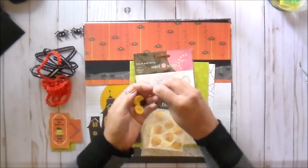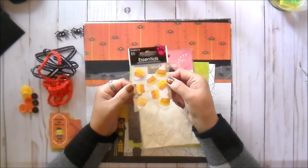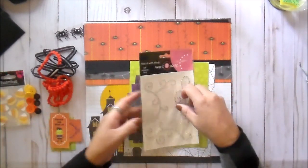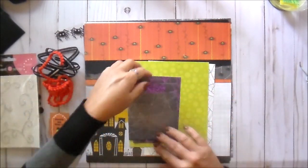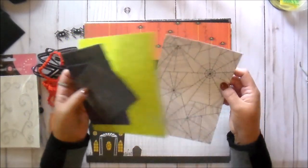And then we have these cute candy corn stickers. I put in some swirly gems—those are stickers as well. And you can use these pieces as photo mats or just as layers on a scrapbook page.